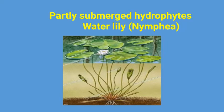Then there are some hydrophytes which are partly submerged in water. We have an example of water lily, which is known as Nymphia. The leaves of Nymphia are on the surface of the water, but the remaining body — roots and petiole — is inside the water.